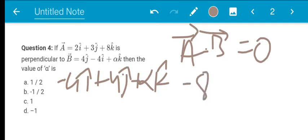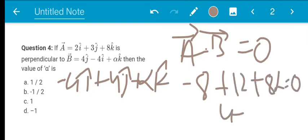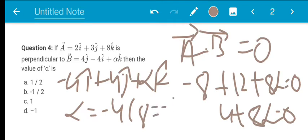So minus 8, 2 into 4, 2 into minus 4 minus 8 plus 3 into 4, 12 plus 8 alpha equal to 0. So I will give 4 plus 8 alpha equal to 0. 4 of the other minus 4. So alpha is equal to minus 4 by 8. That is equal to minus 1 by 2. So option B the correct answer.